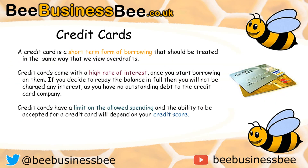A common form of borrowing is a credit card, which is a short-term form of borrowing that should be treated similarly to an overdraft. Credit cards come with a high rate of interest — if you choose to repay the balance in full you won't be charged any interest, but if you don't pay the balance in full the remaining balance will start to accrue interest, which is how the credit card company makes their money. Credit cards typically have a spending limit based on your credit score and the level of risk you represent to the credit card company.